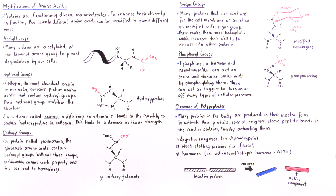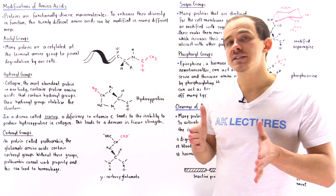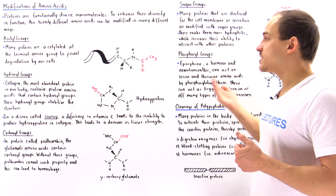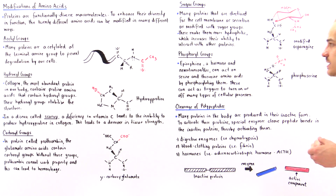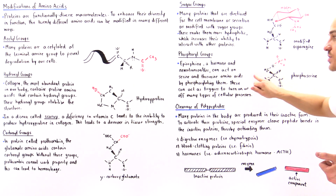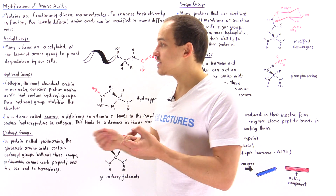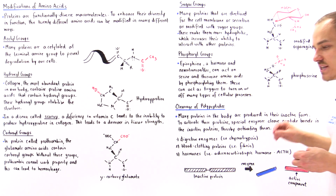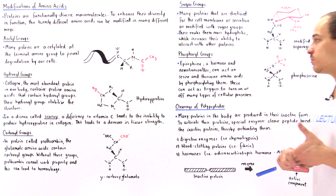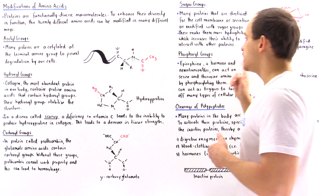Finally, we can undergo the process of phosphorylation — adding phosphoryl groups onto our amino acids. Many different cellular processes use phosphorylation as a way to turn on and off cell processes. For example, epinephrine, a hormone and neurotransmitter, can act on serine and threonine amino acids by phosphorylating them, turning on or off many different types of molecules and reactions. Insulin, which regulates the amount of glucose in our blood, also functions via this process using phosphoryl groups.